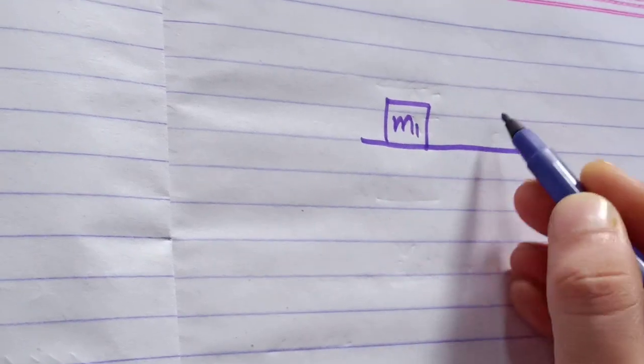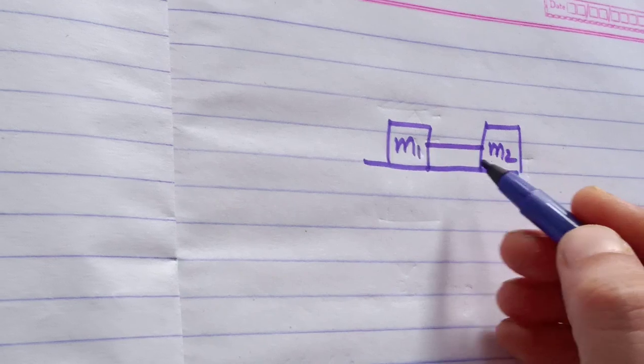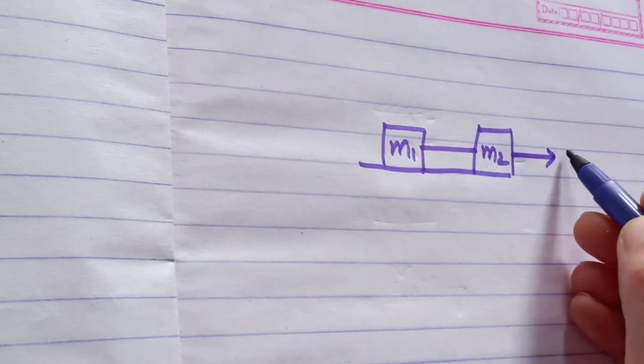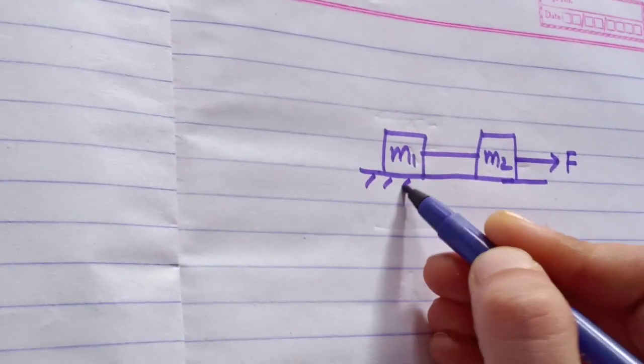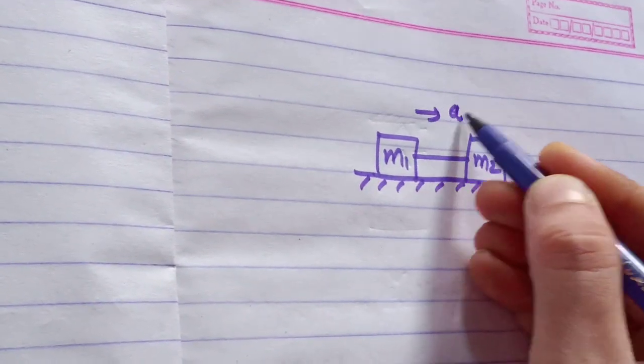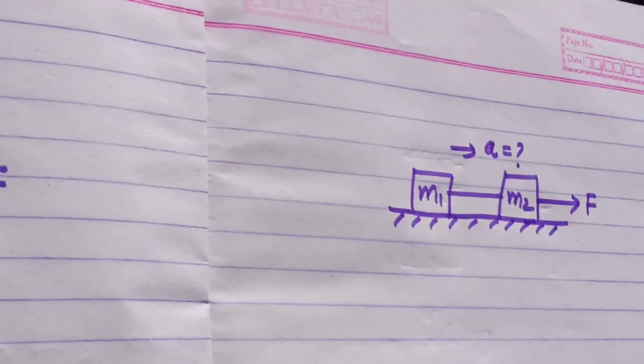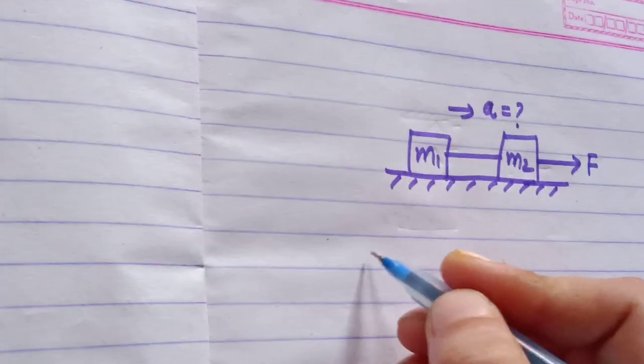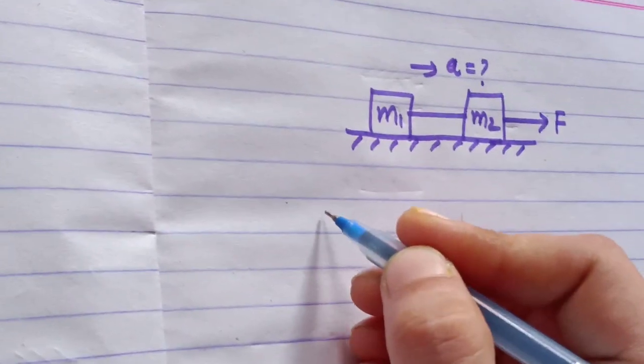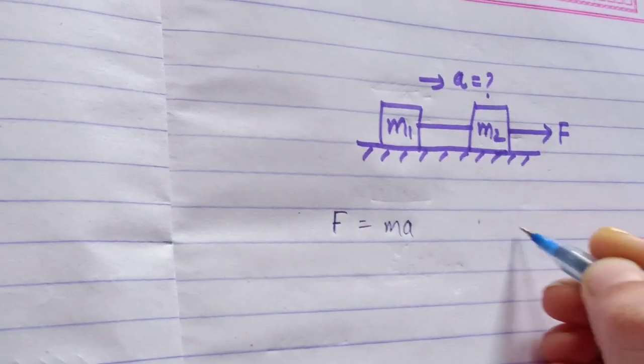First we take two blocks m1 and m2 which are connected by a string, and the force is F. What is the acceleration of the blocks? For this we will find it like this: F equals Ma, where